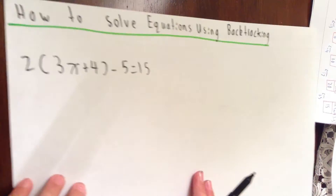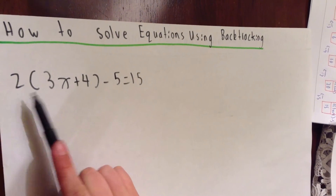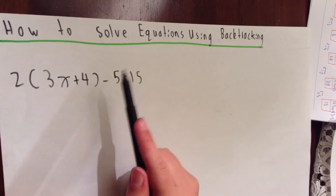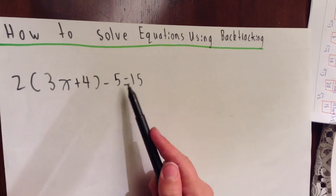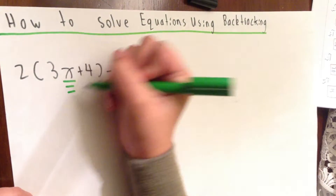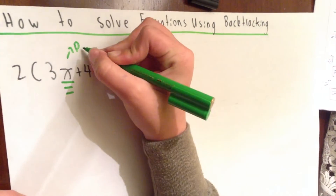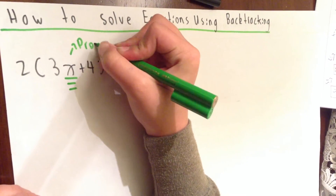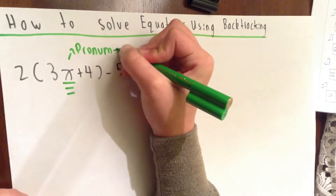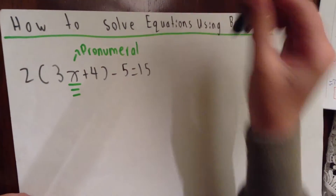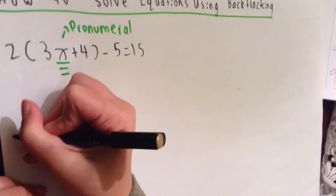Next question, which is a bit tricky. Now we have 2 bracket 3x plus 4 bracket minus 5, which equals 15. So we're trying to find the value of x, which is a pronumeral. Now we need to draw a flow chart, and after that we do backtracking.